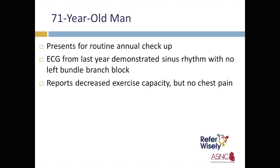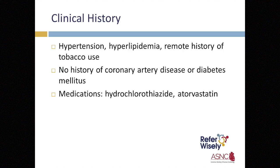The patient is a 71-year-old man who presented to his internist for a routine annual checkup. His prior electrocardiogram demonstrated normal sinus rhythm with no evidence of any interventricular conduction delay, including left bundle branch block. The patient denies chest pain but reports decreased exercise capacity. His past medical history is significant for hypertension, hyperlipidemia, and a remote history of tobacco use. He has no history of coronary artery disease or diabetes mellitus. His hypertension is controlled with hydrochlorothiazide, and he is on atorvastatin for his hyperlipidemia.